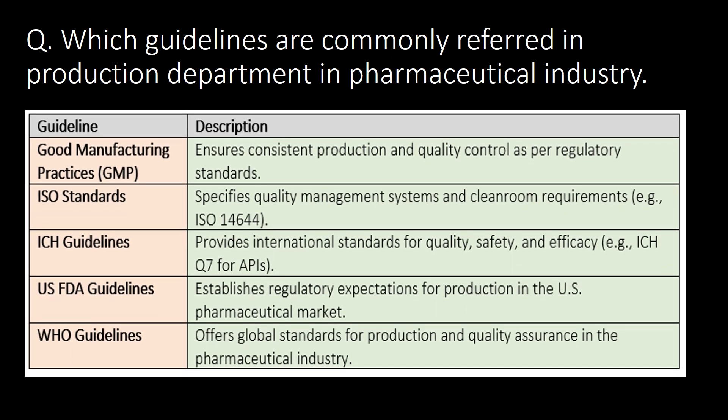Last and very important question: Which guidelines are commonly referred to in the production department of the pharmaceutical industry? The commonly referred guidelines are: 1. GMP - Good Manufacturing Practices, 2. ISO standards, 3. ICH guidelines, 4. US FDA guidelines, and 5. WHO guidelines.